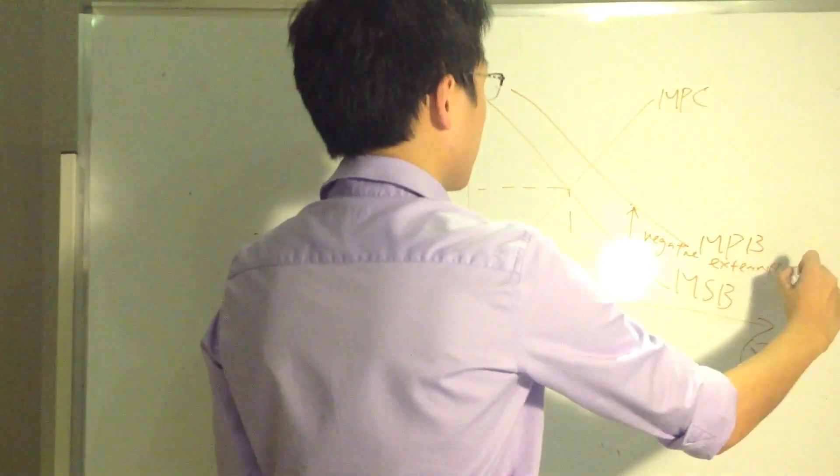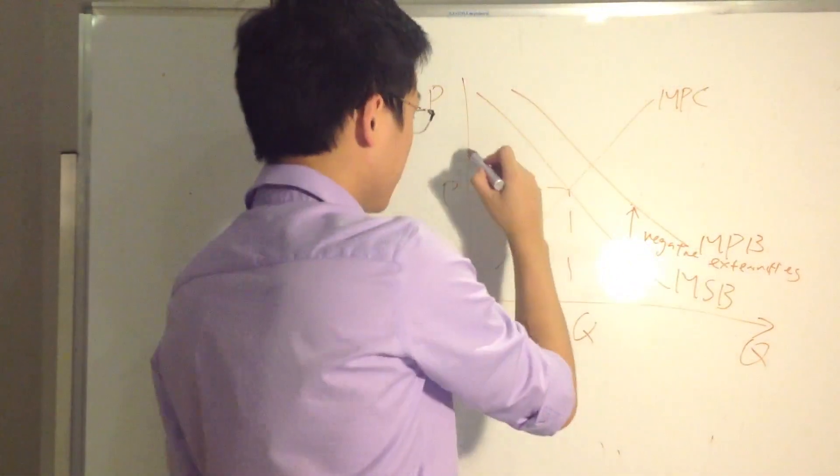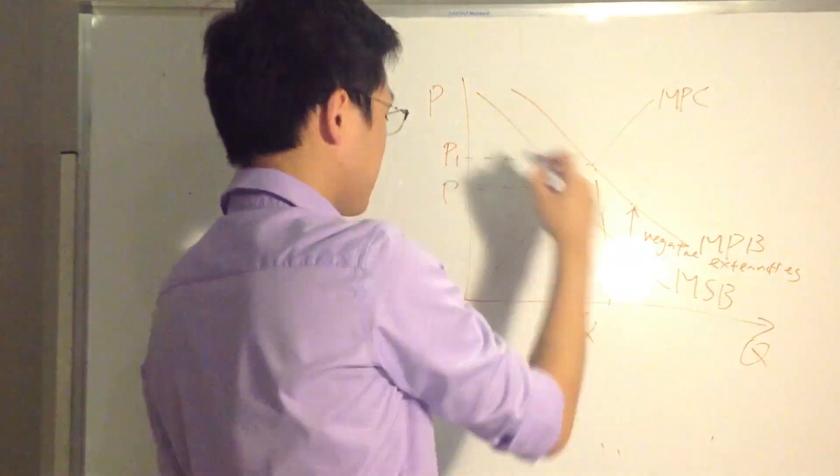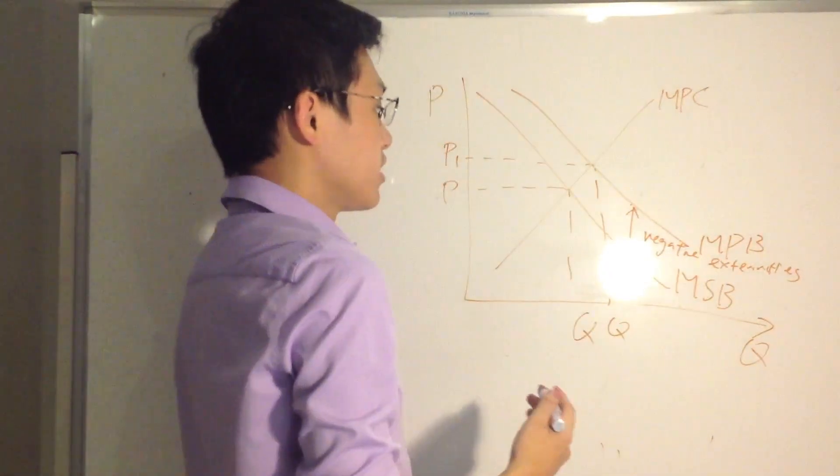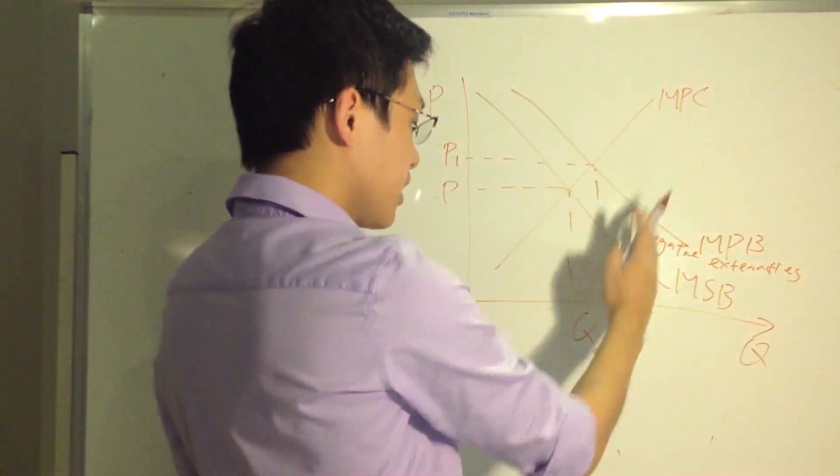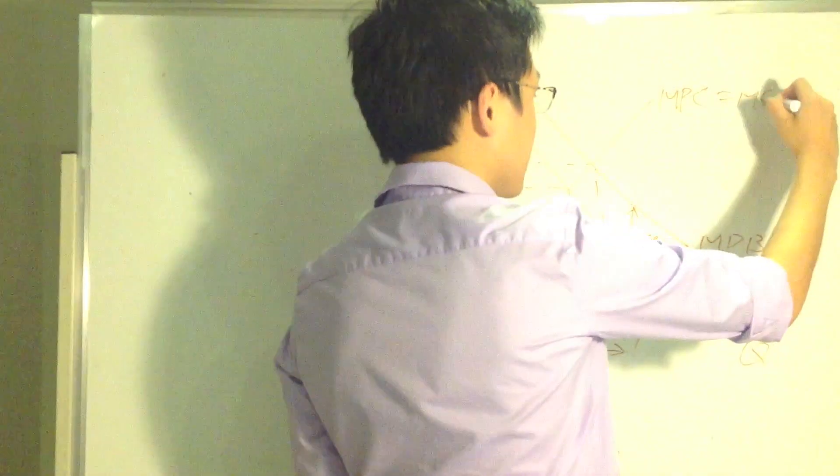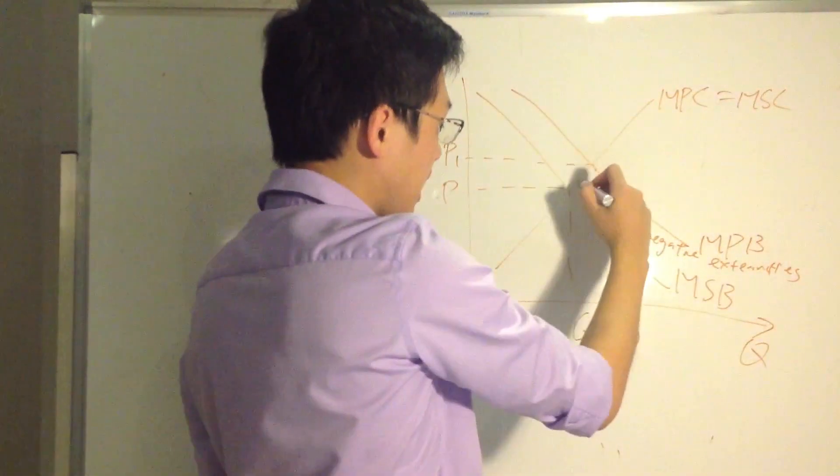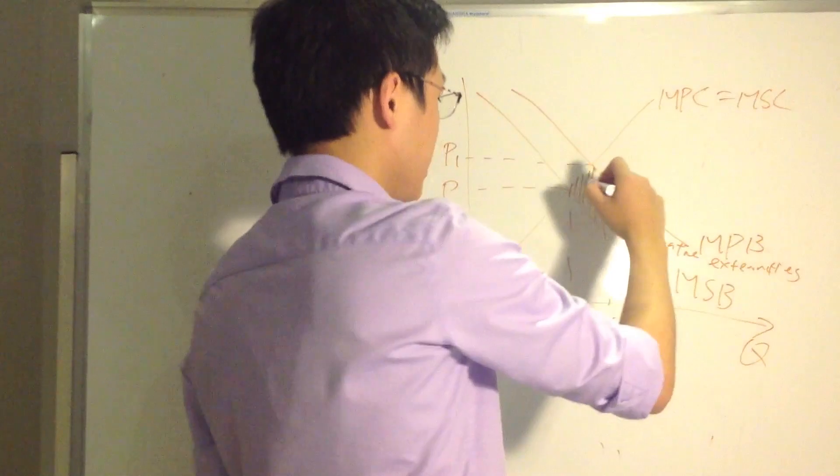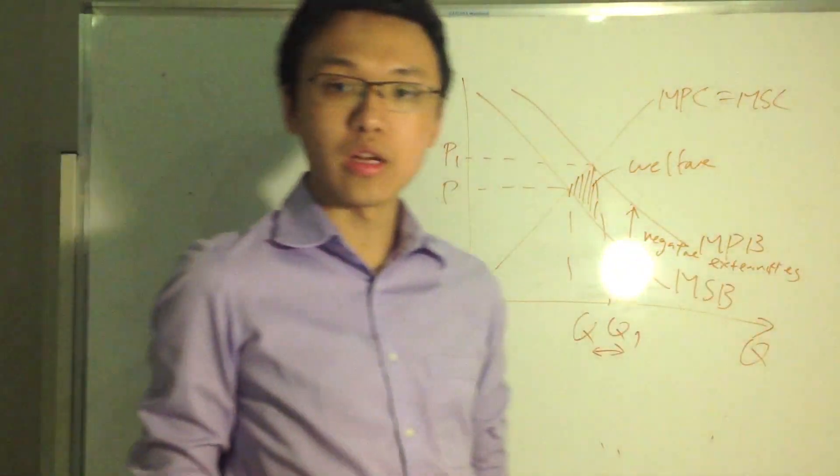So the point here, when you explain this diagram, the point is that consumers only consider private benefits. Thus, the free market equilibrium will be at P1, Q1. So cigarettes is over-consumed by Q1 minus Q units. And between Q to Q1, MSC is greater than MSB. So since MSC is greater than MSB, there's the welfare loss, which is labeled here. So this is a very good introduction for the first paragraph.